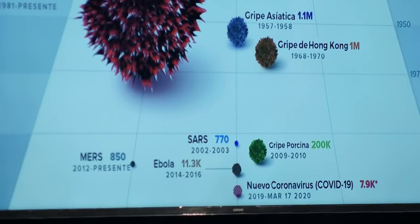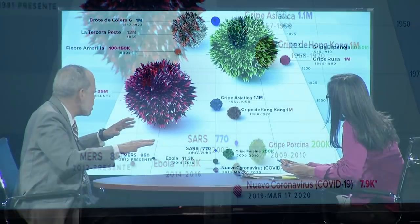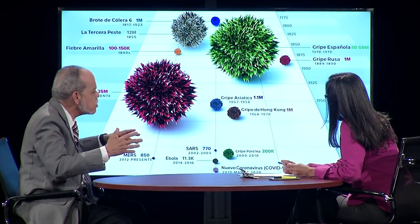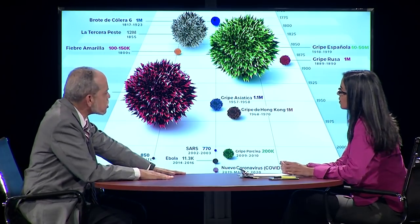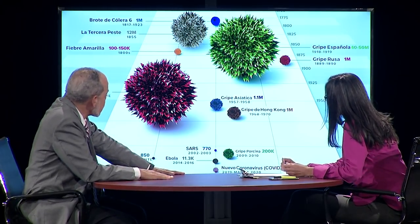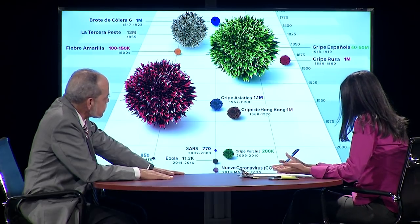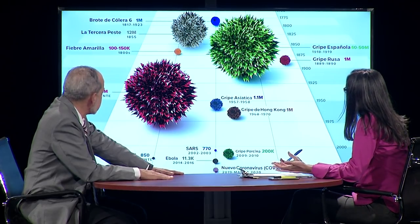Comparemos estos tres coronavirus: el MERS, 35% de mortalidad; el SARS, 9.5 a 10% de mortalidad, también en China en 2002-2003; y el actual COVID-19, quizás un 2%. La mortalidad global anda en un 4%, pero realmente termina siendo alrededor de un 2%. En términos de contagio, ¿cuál es la diferencia con el SARS de 2002-2003, donde solamente se registraron 770 muertes?